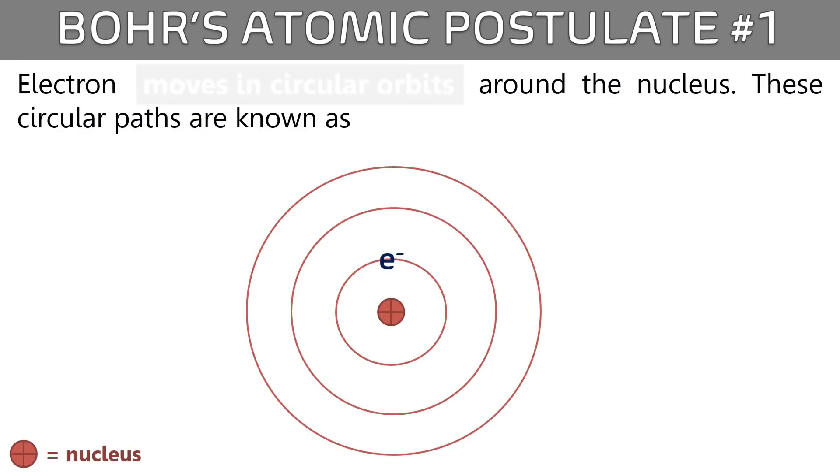Number one. Electrons move in circular orbits around the nucleus. These circular paths are known as energy levels.